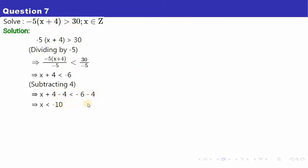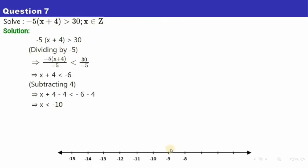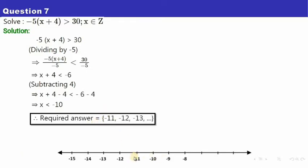So x is less than minus ten. x is from the integers, so we need integers less than minus ten. On the number line, these are numbers to the left of minus ten: minus eleven, minus twelve, minus thirteen, minus fourteen, minus fifteen, minus sixteen, minus seventeen, and so on. The answer starts from minus eleven and continues.